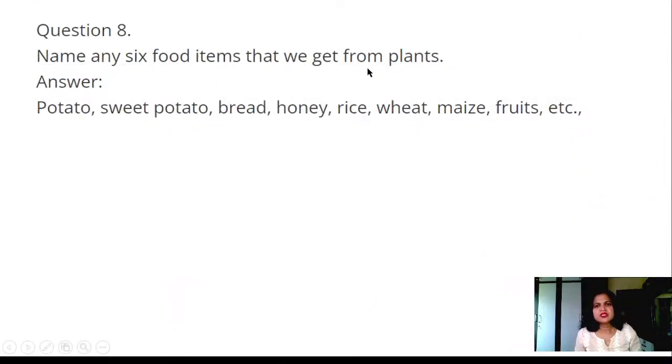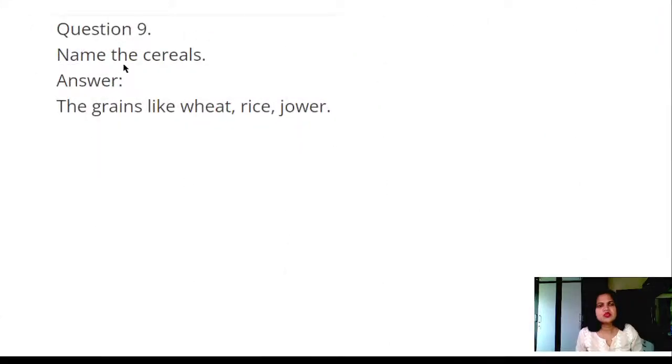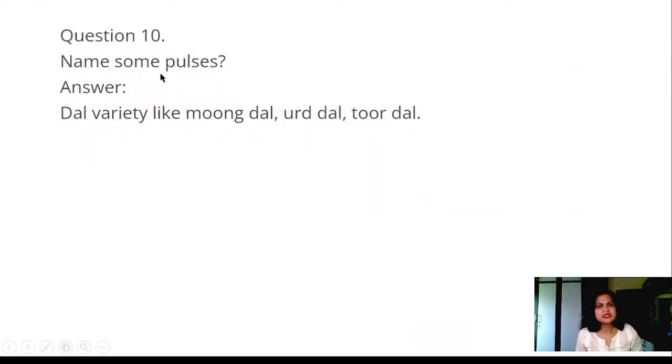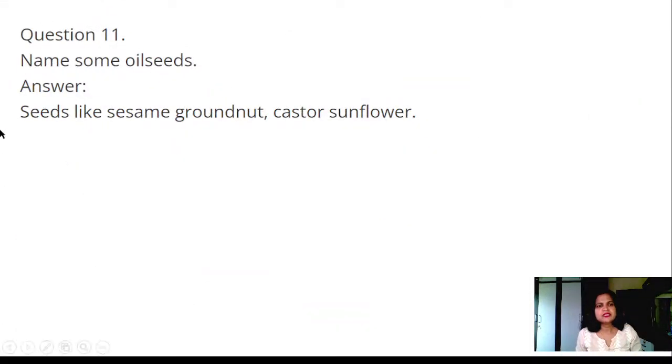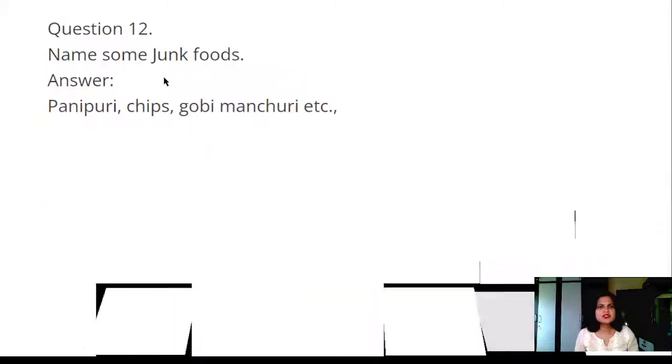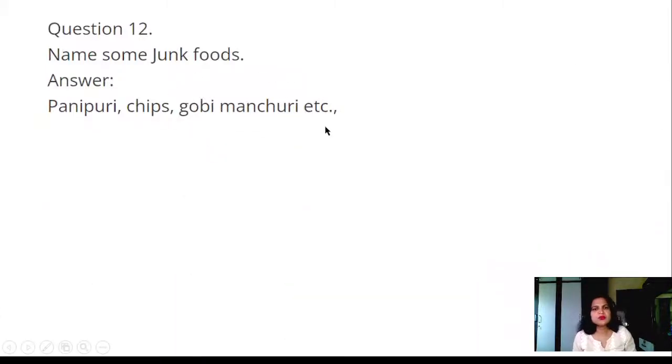Question 8: Name any six food items that we get from plants. Answer: Potatoes, sweet potato, bread, honey, rice, wheat, maize, fruits, etc. Question 9: Name the cereals. Answer: The grains like wheat, rice, jowar. Question 10: Name some pulses. Answer: Dal varieties like moong dal, urad dal, toor dal. Name some oil seeds: Seeds like sesame, groundnut, castor, sunflower. Name some junk foods: Pani puri, chips, gobi manchurian, etc.